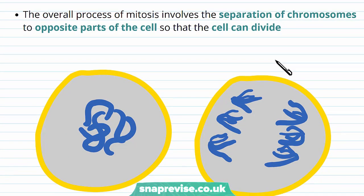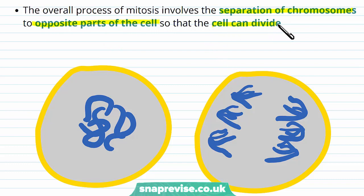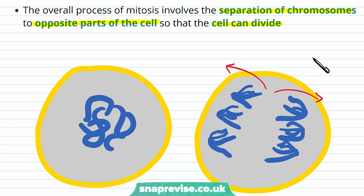The overall process of mitosis is to divide the replicated chromosomes into separate, opposite areas of the cell, so that the cell can split down the middle and divide into two. So interphase is where we replicate the DNA, mitosis is where we separate it into two different regions, and then cytokinesis is when we divide the cell into two individual cells.